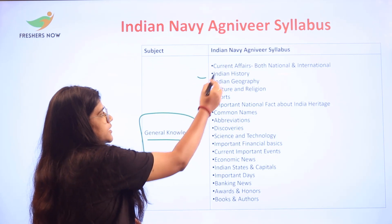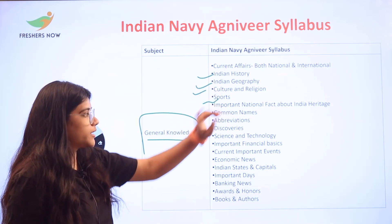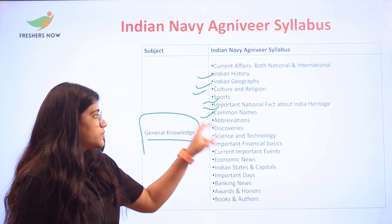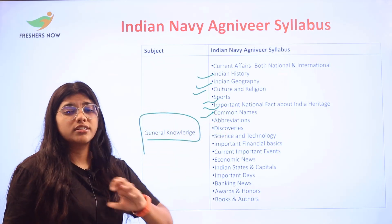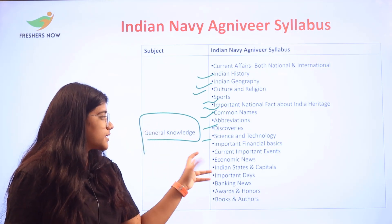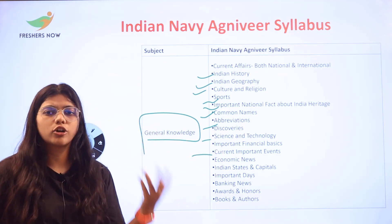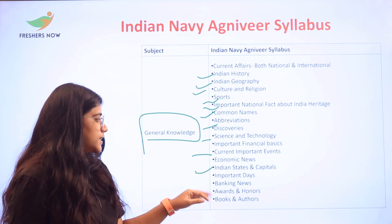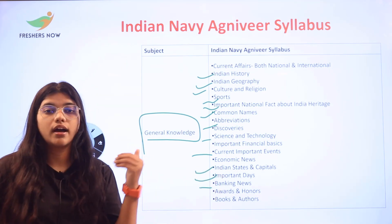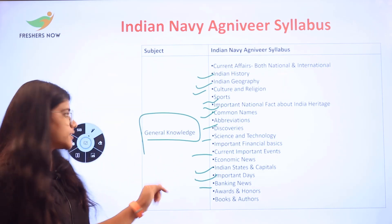The general knowledge topic list includes: current affairs, Indian history, geography, culture and religion, sports, national facts about Indian heritage, common names, abbreviations, terminologies, discoveries, science and tech, financial basics, current important events, economic news, Indian states and their capitals, important dates, banking news, awards and honors, and books and authors.